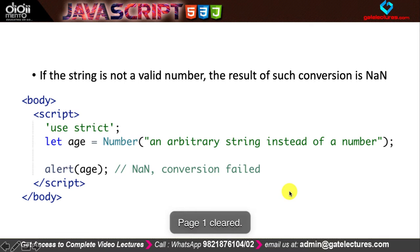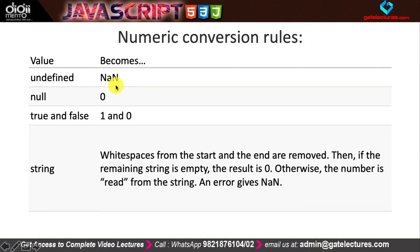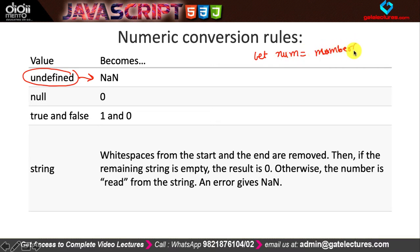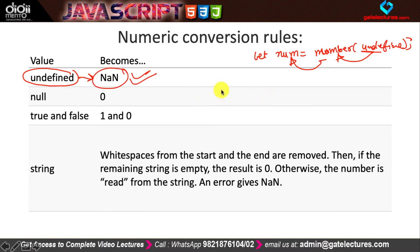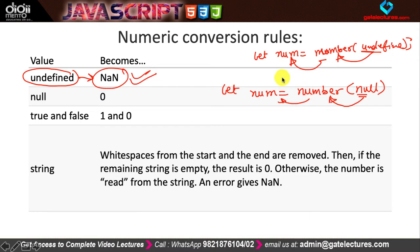If you try to convert undefined to a numeric value, you get NaN — meaning it is not a valid conversion. For example, 'let num = Number(undefined)' stores NaN in num. However, if you pass null — 'let num = Number(null)' — null is converted to zero, so num becomes 0.